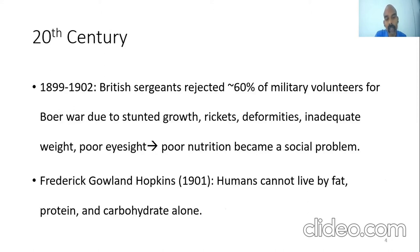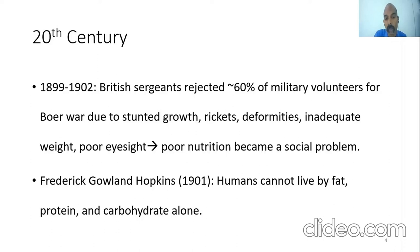In 1902, Britain realized that about 60 percent of military volunteers for the Boer War in South Africa were stunted, had deformities, inadequate weight, and poor eyesight, and could not be conscripted into the army. This led to another discussion in Britain regarding the nutritional status of the general public, and poor nutrition became a recognized social problem.